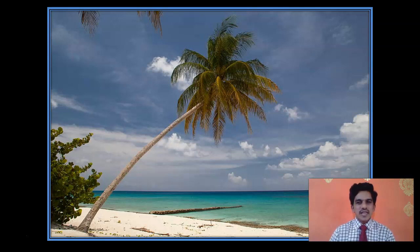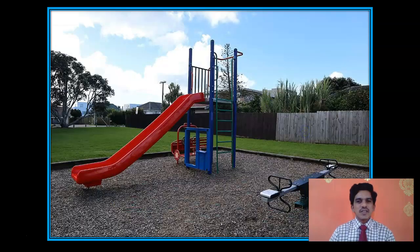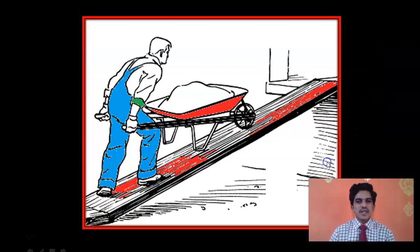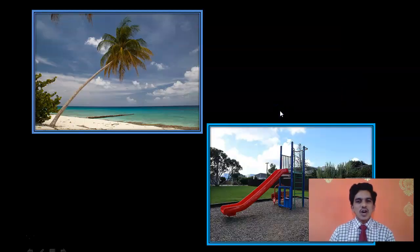There is a lone coconut tree on a beach, here you have a slide in a park, and this is the staircase of a building. Then you have a man who is taking a load to a place which is at a height, so he is using — can you tell me what this is called? It is actually called an inclined plane. In all these pictures there is one thing which is common — can you tell me what that is?